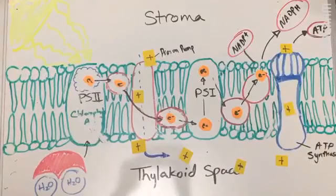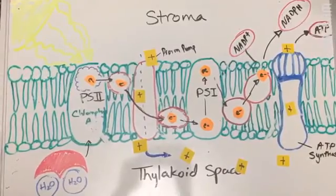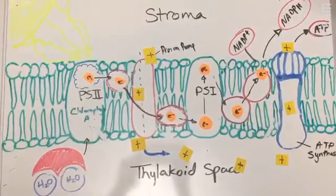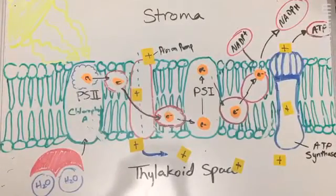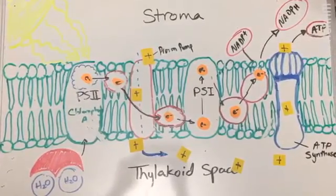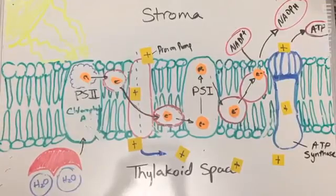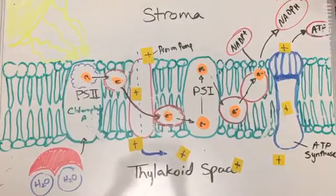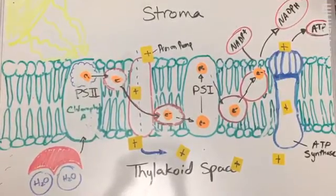Electrons continue to pass through the electron transport chain through Photosystem I until they reach the protein NADP reductase, where electrons transfer to NADP+ to make NADPH.